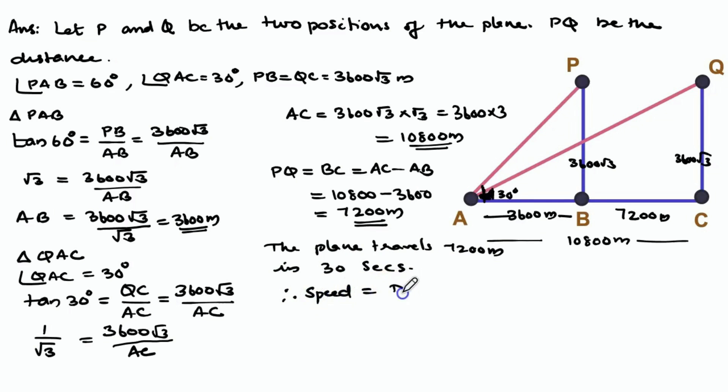Friends, we know speed equals distance divided by time. Equals 7,200 divided by 30. Equals 240 meters per second. Equals 240 divided by 1000 into 60 into 60. Equals 864 kilometers per hour.